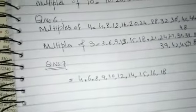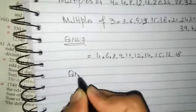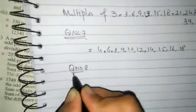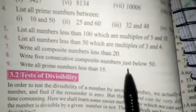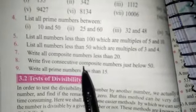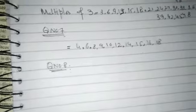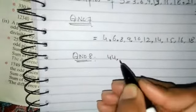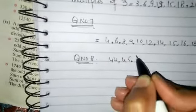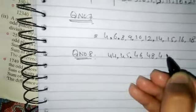These are composite numbers less than 20. Next, question number 8: write 5 consecutive composite numbers just below 50. We need to write consecutive composite numbers just below 50, meaning continuous composite numbers: 40, 44, 45, 46, 48, 49.